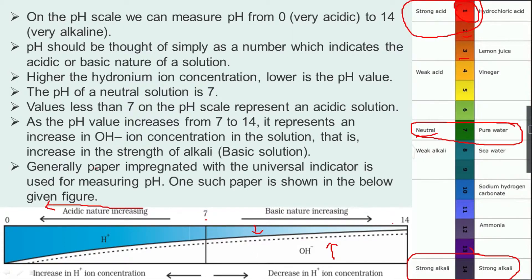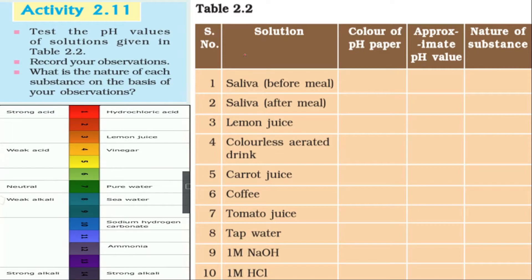Generally, paper impregnated with the universal indicator is used for measuring pH. As you can see in the given figure, a neutral solution has a pH of 7. If we go to the left side it shows more acidic nature, and if we go to the right side it shows more basic nature. Moving left increases H+ concentration, and moving right increases OH- concentration while H+ decreases.